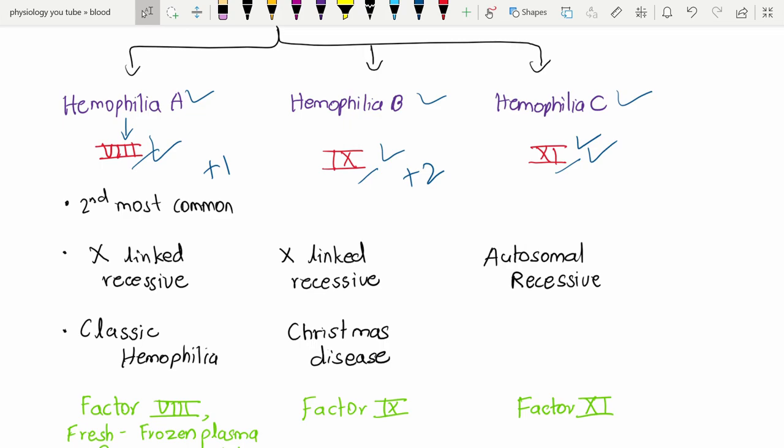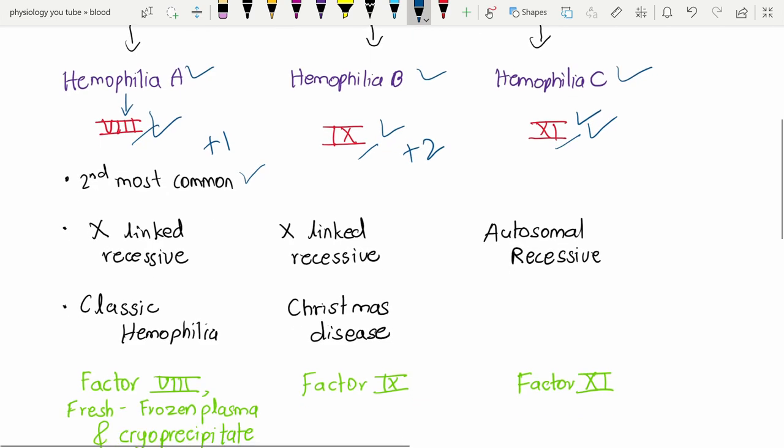Hemophilia A is the second most common bleeding disorder, next to von Willebrand disease. The mode of inheritance in hemophilia A is X-linked recessive, and in hemophilia B is also X-linked recessive.